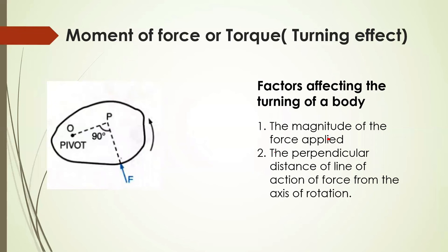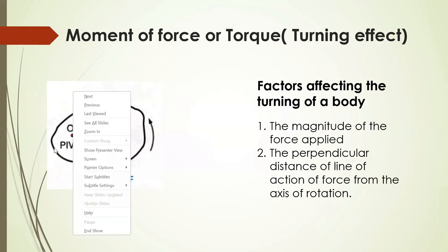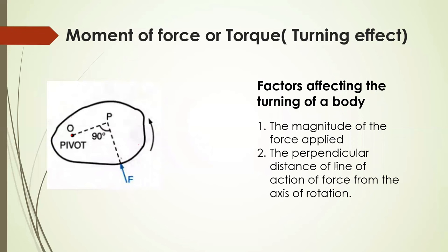A very important concept we are going to learn here is moment of force, or torque — simply called the turning effect. What is a turning effect? We just saw what is a rotational motion. When a body is pivoted at one end and I apply a force in any direction, the body starts rotating in either clockwise or anti-clockwise direction. So if I want to find out what is the turning effect or the torque, it is determined by how much force I apply and in what direction.